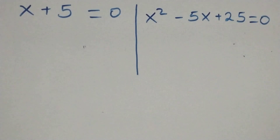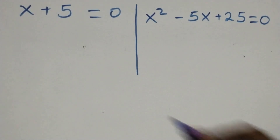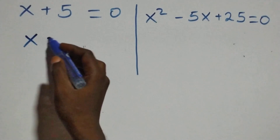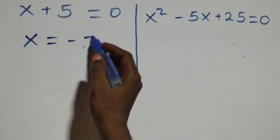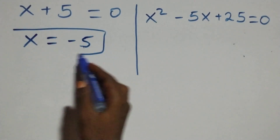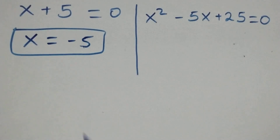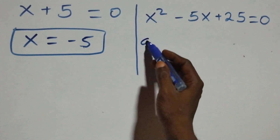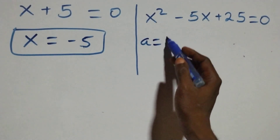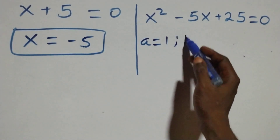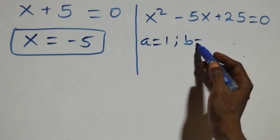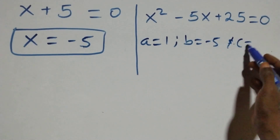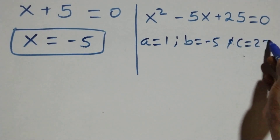Solving on this side, this becomes x equals to minus 5, which is a real solution. And here we have a quadratic equation where a equals to 1, b equals to minus 5, and c equals to 25.